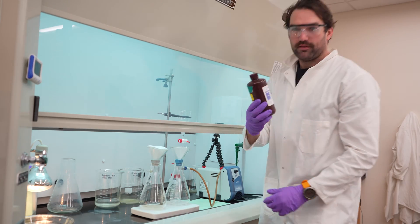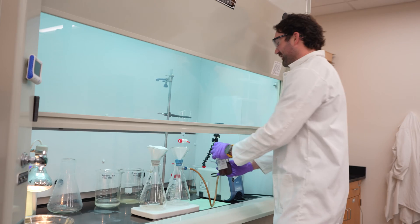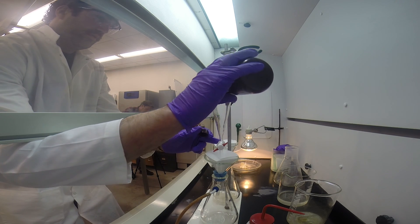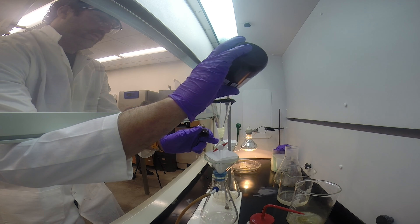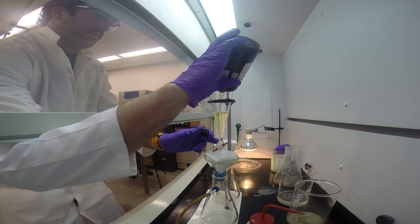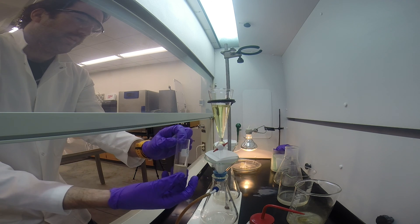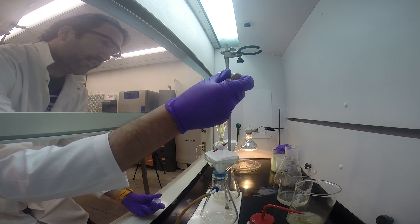To continue our quest, we turn to what is called heavy liquids. In particular, methylene iodide has a density that is greater than most of the grains left in our dwindling sample, but less than the mighty zircons. So zircons separate and sink to the bottom, and with careful procedures, we collect them.